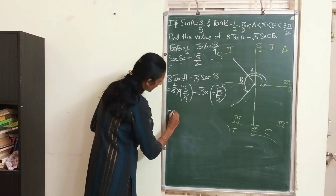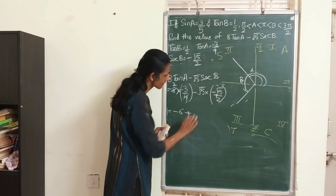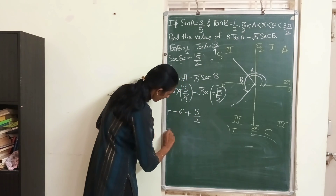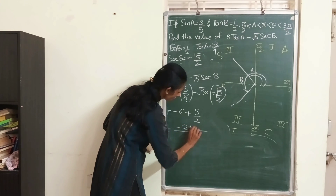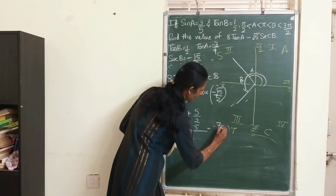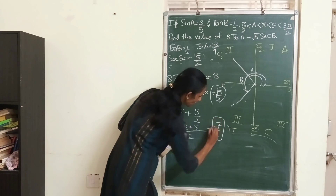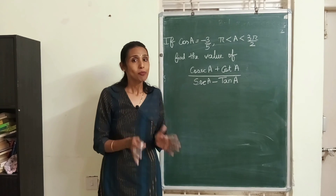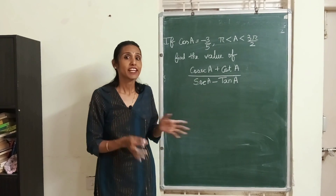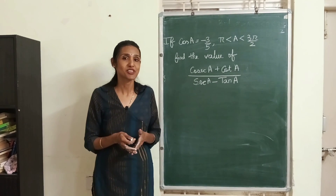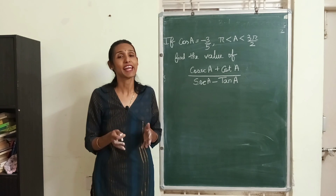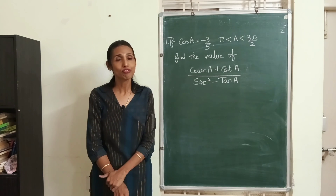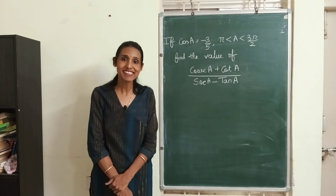Simplifying: 8 × (−3/4) = −6, and −√5 × (−√5/2) = +5/2, since √5 × √5 = 5. Taking the LCM: (−12 + 5)/2 = −7/2. So the value of the expression is −7/2. For practice, do try out similar questions and leave your answer in the comments. If you found the video useful, please like, share, and subscribe to Enjoy Math!